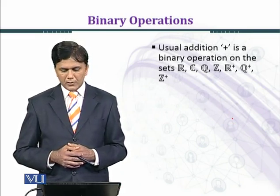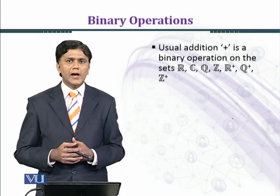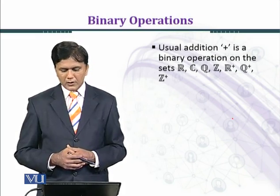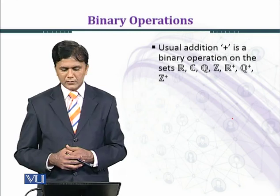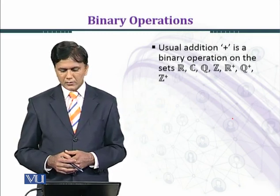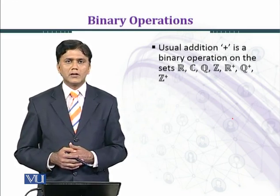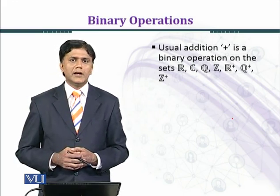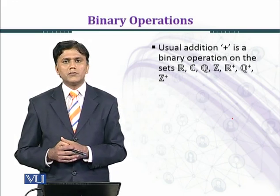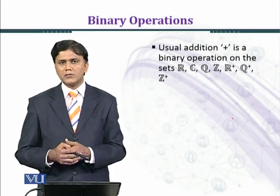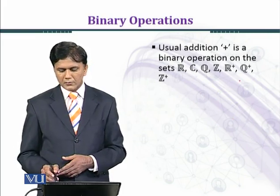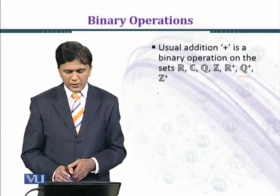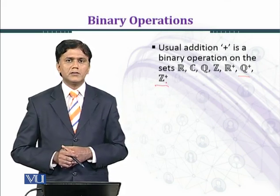Now we are considering some examples. When we add two real numbers we get a real number. Similarly, when we add two complex numbers we get a complex number, when we add two rational numbers we get a rational number, when we add two integers we get an integer, and when we add two positive real numbers we get a positive real number.